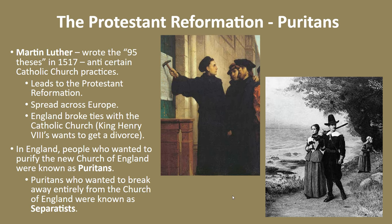A more radical group of Puritans not only opposed Catholic traditions in the Anglican Church but were willing to go further. When it became common knowledge that the monarchy wasn't going to purge these Catholic traditions, a group of Puritans known as the Separatists attempted to break away entirely from the Church of England. Breaking from the Church of England meant breaking from the king — a very bold move. Try not to confuse the terms Puritan and Separatist, as there is a big difference between the two.